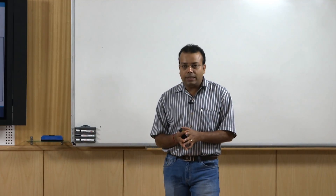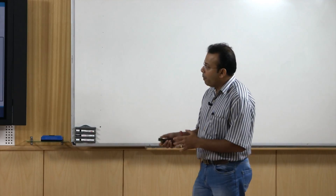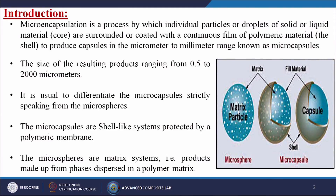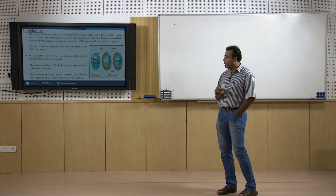In other words, this is a formation of the core-shell structure. Microencapsulation is a process by which individual particles or droplets — either in solid or liquid form — are surrounded or coated with a continuous film of polymeric materials, known as the shell, to produce capsules in the micrometer to millimeter range, known as microcapsules. The size of the resulting products ranges from 0.5 to 200 micrometers, and we can easily control the thickness of the coating.